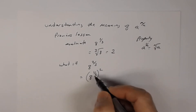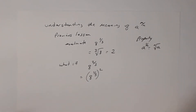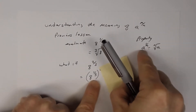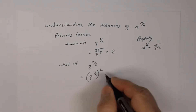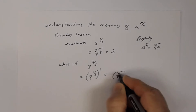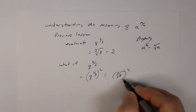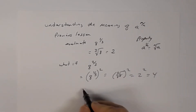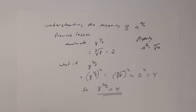From a previous lesson, 8 to the 1/3 means the cube root of 8. So this becomes the cube root of 8, squared. The cube root of 8 is 2, and 2 squared is 4. So 8 to the 2/3 is equal to 4.